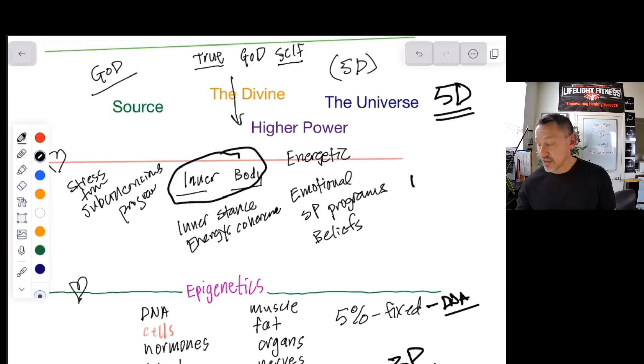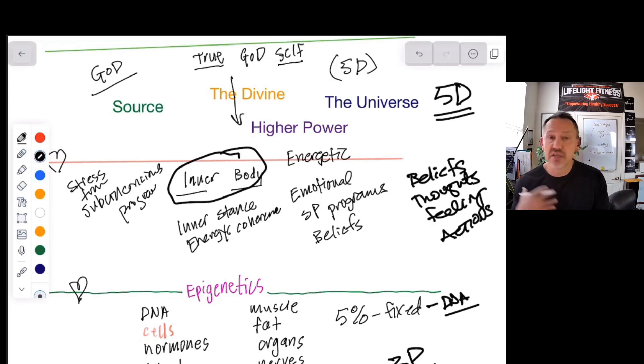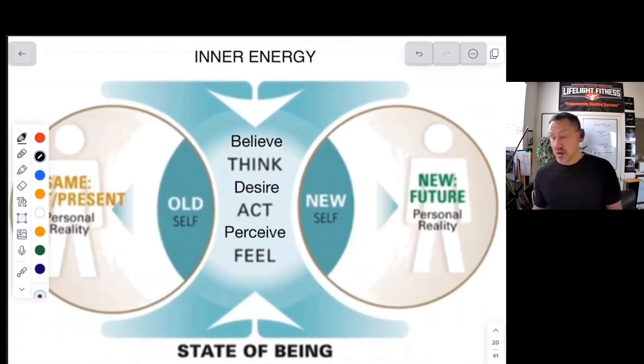If you want to break it down, it's your beliefs about yourself and about the world, it's the thoughts, it's emotions, and it's actions. Becoming aware of what's happening in your inner body is the most important thing any of you can do. How am I feeling? Where am I feeling it? What am I thinking about? Where's my attention going right now? That level of awareness will raise your consciousness and help you elevate where your energy coherence is much healthier. This is all connected.